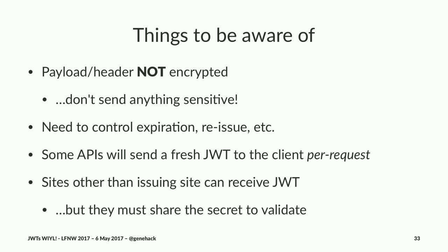You need to manually handle expiration and reissue. There's a reserved key called EXP that sets an expiration time, and your software needs to be checking whether a token is expired. Some APIs work around that by sending a fresh JWT back on every request, so any token has a very short lifetime. You can also use JWTs for single sign-on — get a JWT from one place and send it to a second place, as long as they're sharing the secret for validation.